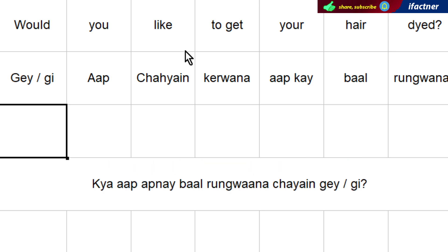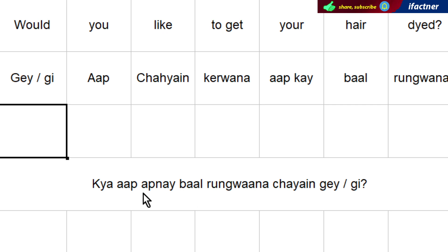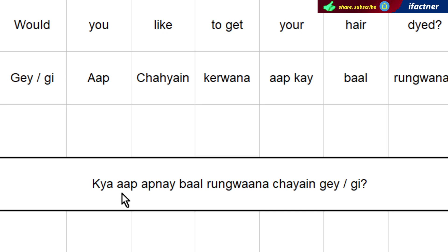He may ask further: 'Would you like to get your hair dyed black, grey, golden?' — something like that. 'Black' is 'kale', 'golden' is 'sunhairay', 'grey' or 'white' — something like it. The customer may then answer 'yes'.